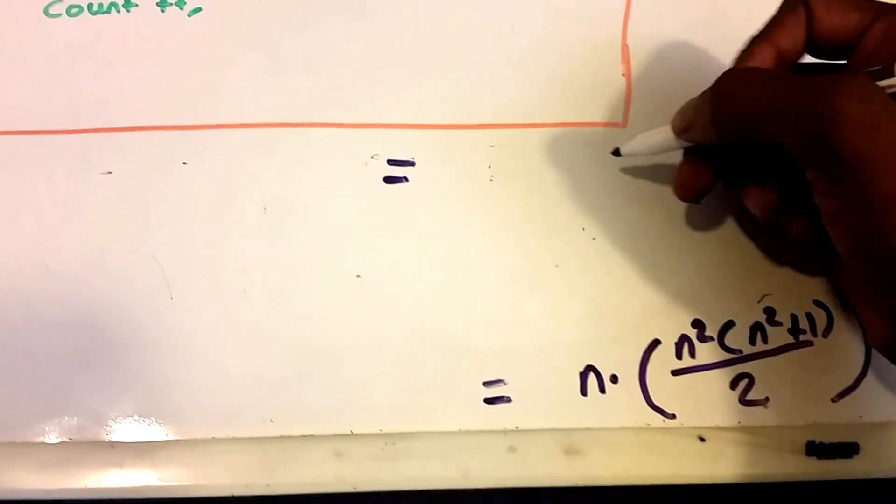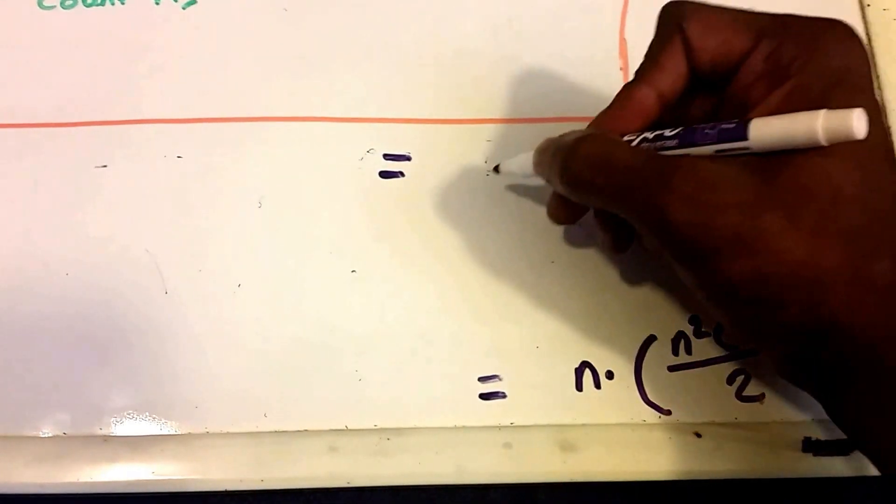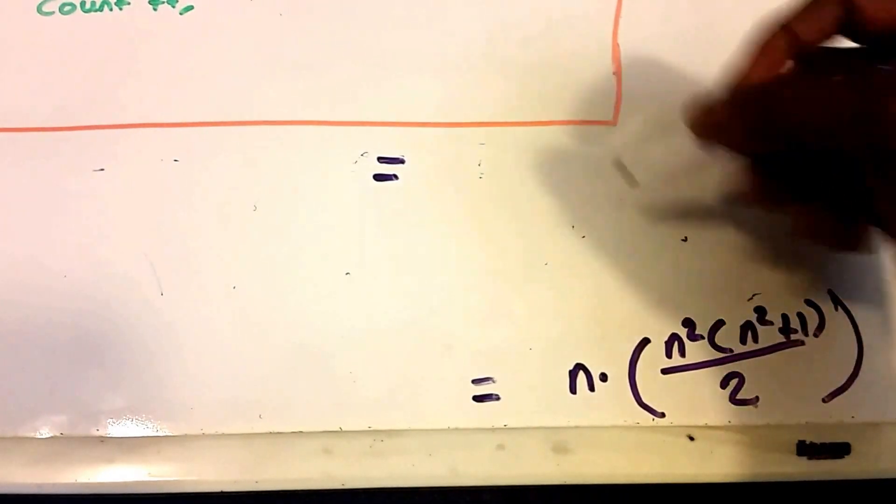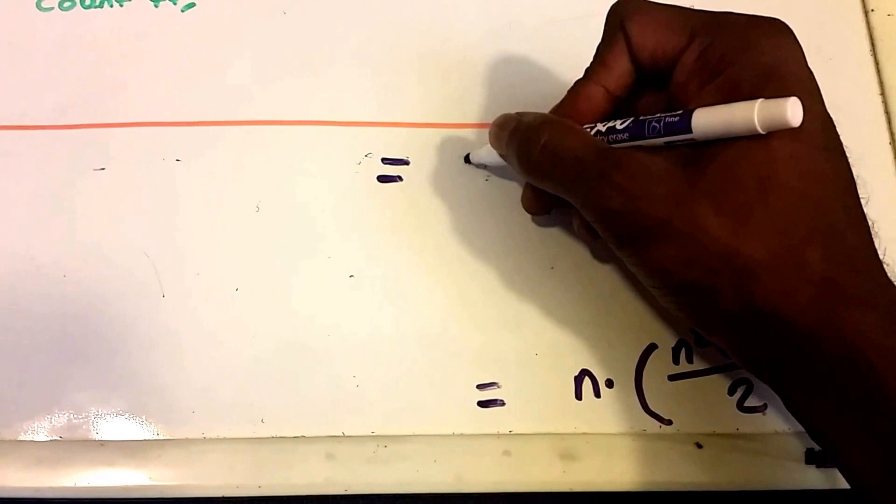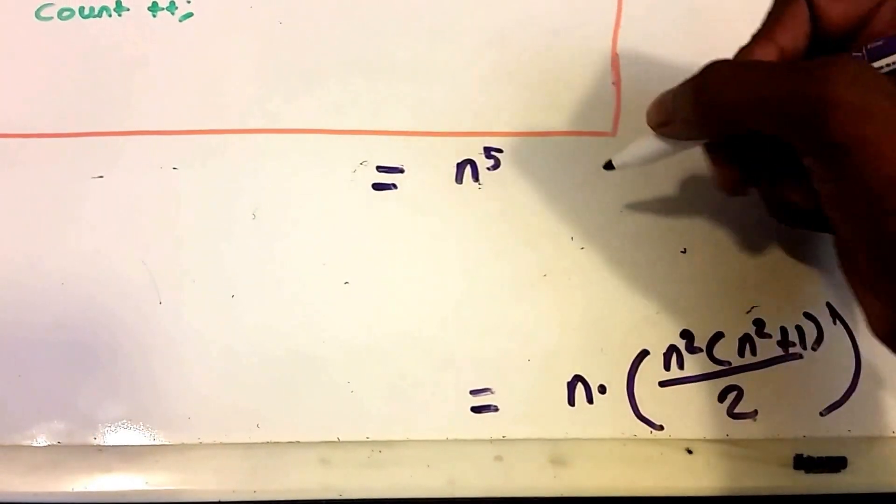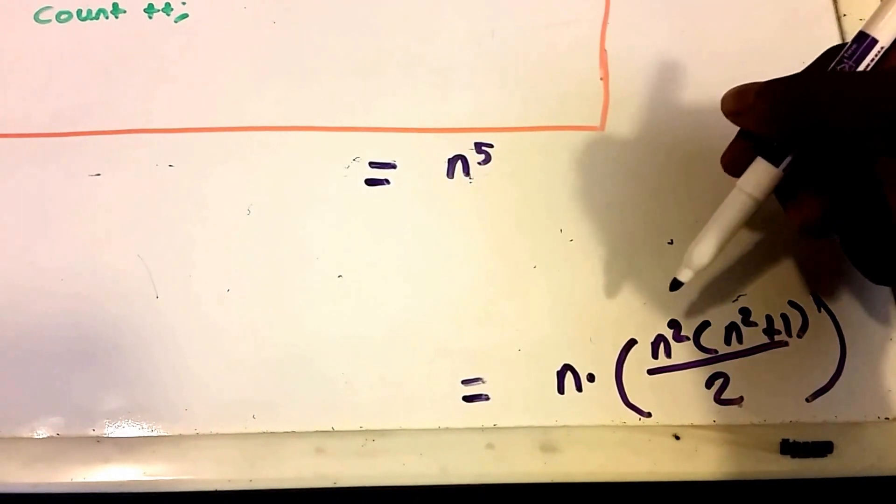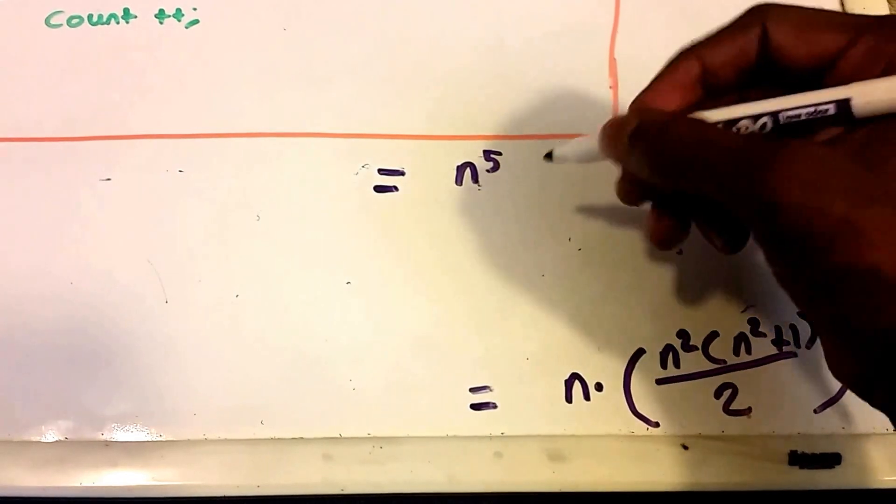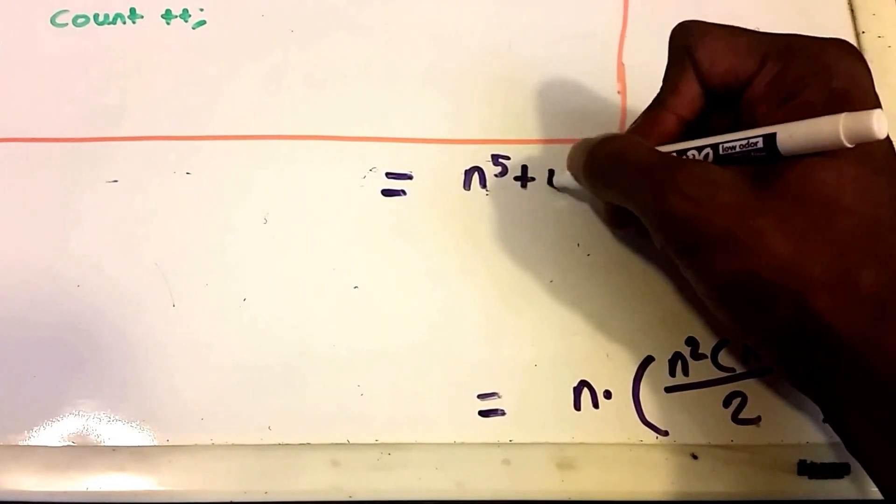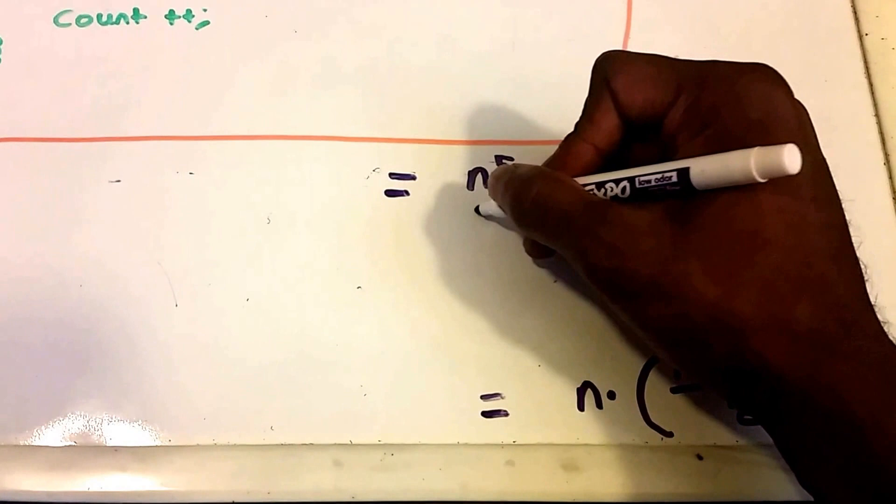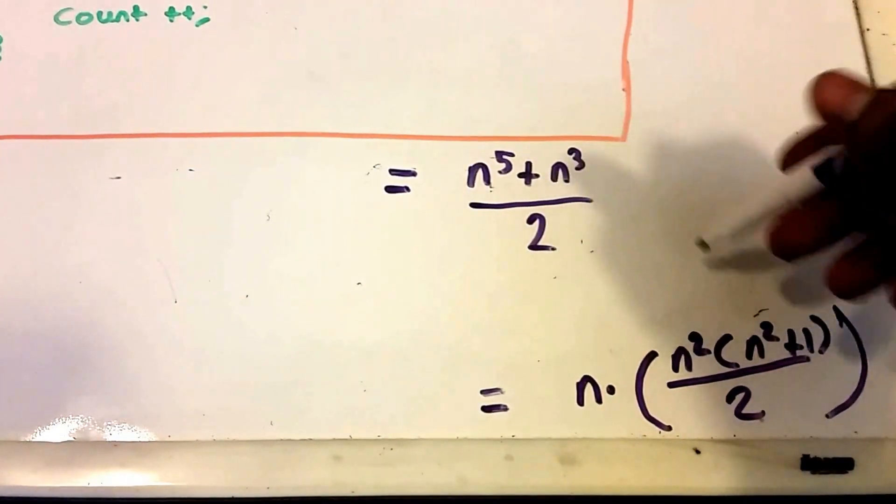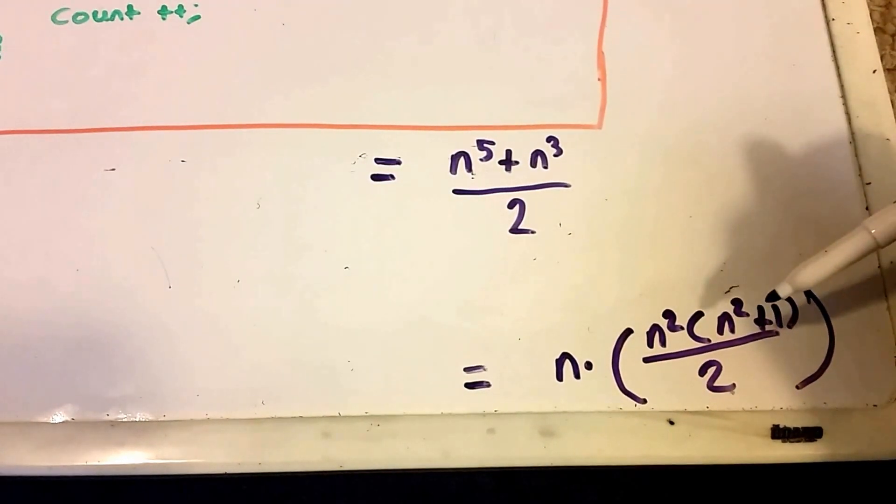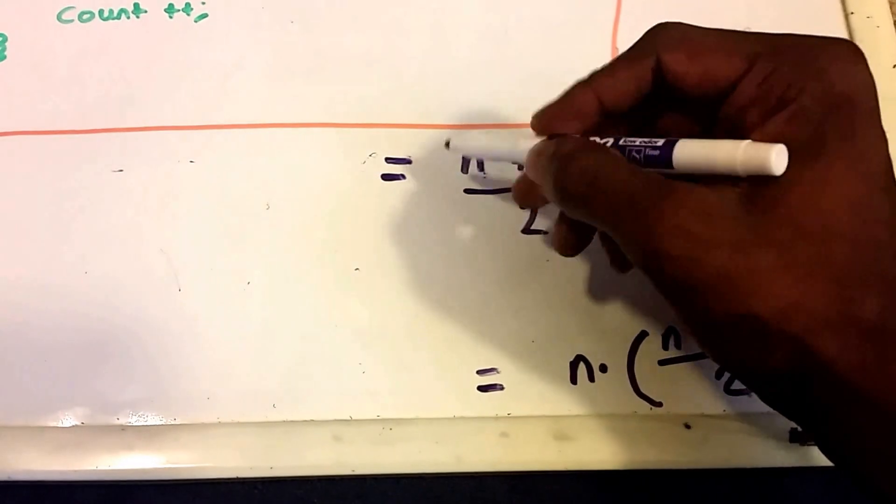And so now we're starting from the top here. I'm just going to multiply all this out. So we get, let's see, n times n to the power of two times n to the power of two is n to the power of five. And let's see, that would be n times n to the power of two times one, so that's n cubed. So plus n cubed, and all that divided by two.